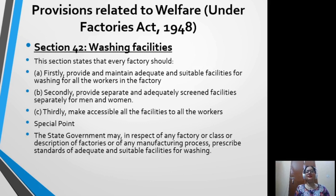Section 42 covers washing facilities. This section states that every factory should firstly provide and maintain adequate and suitable facilities for washing for all workers; secondly, provide separate and adequately screened facilities for men and women; and thirdly, make all facilities accessible to all workers. The state government may, in respect of any factory or class of factories or any manufacturing process, prescribe standards of adequate and suitable facilities for washing.